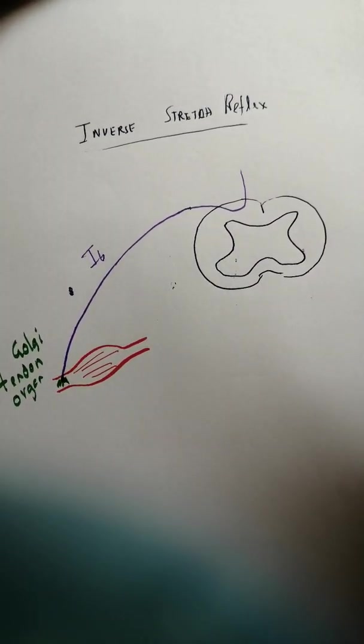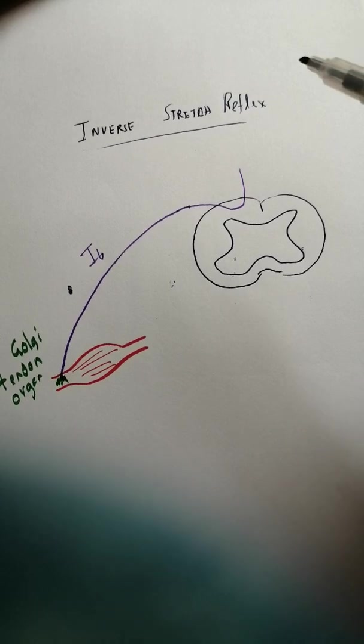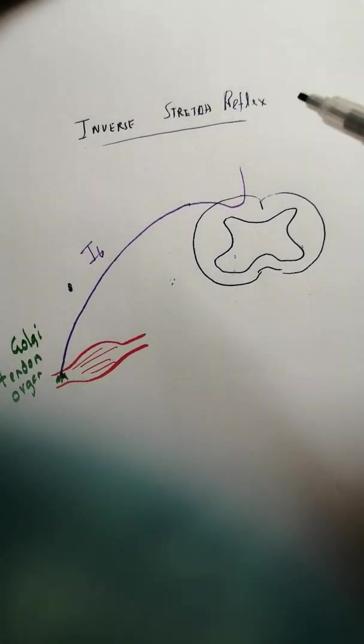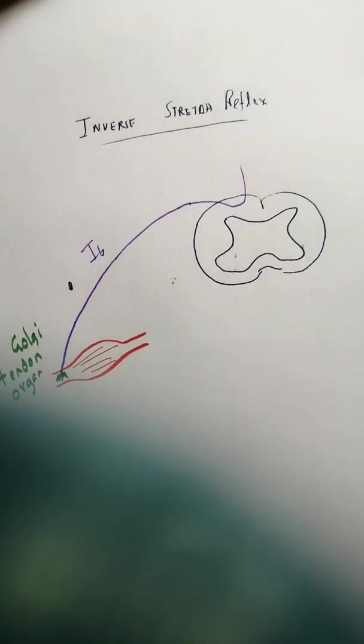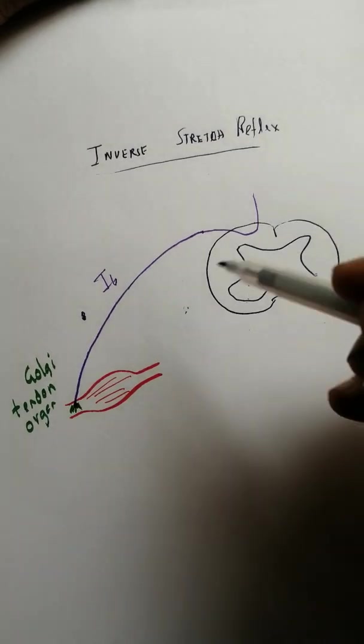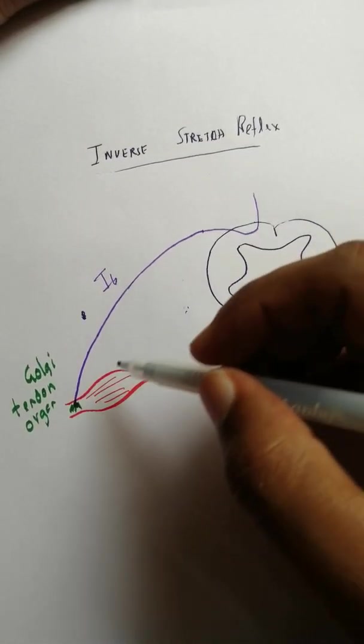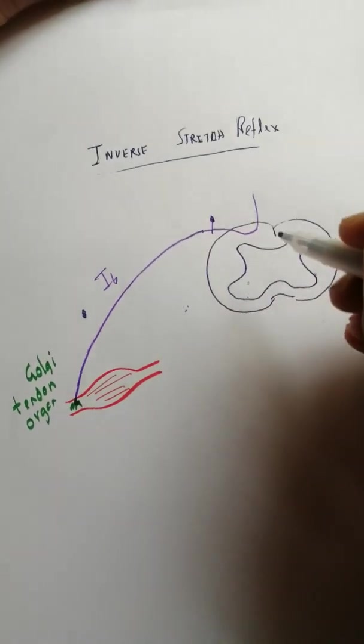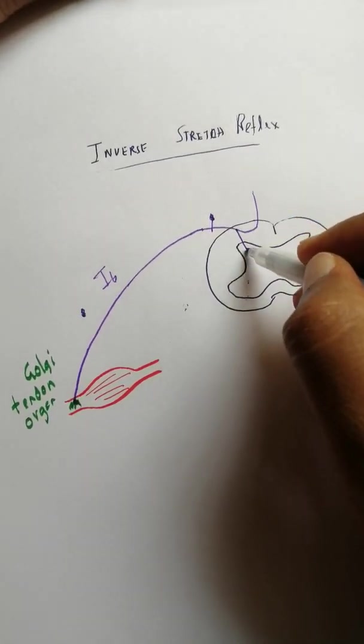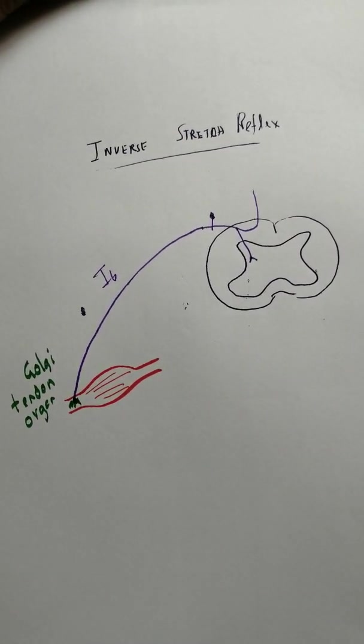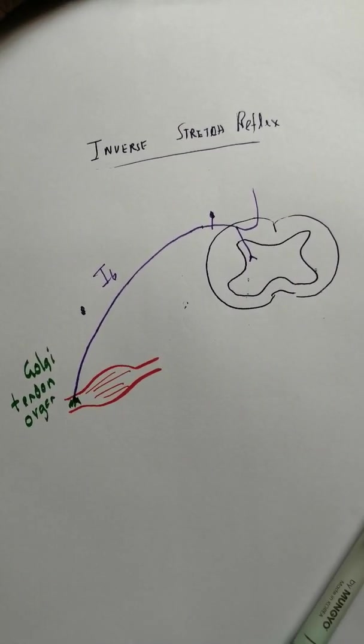1B fibers go through the dorsal column upwards to the brain - again this is sensing the muscle length. This 1B fiber is going in, you have a dorsal root ganglion, and it supplies an inhibitory interneuron.